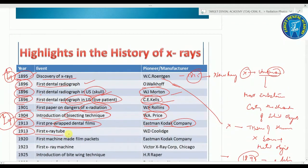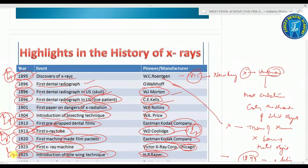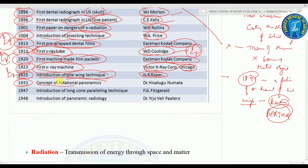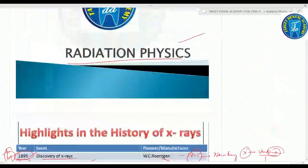In 1920, the first machine-made film packets were produced by the Eastman Kodak Company. In 1923, the first X-ray machine was introduced by Victor X-ray Corp., Chicago. In 1925, the bitewing technique was introduced by H.R. Raper. In 1933, the concept of rotational panoramics was introduced by Dr. Hisatugu Numata. In 1947, the long-cone paralleling technique was introduced by F.G. Fitzgerald. In 1948, panoramic radiology was introduced by Dr. Yrjö Paatero. These are very important for your exam.